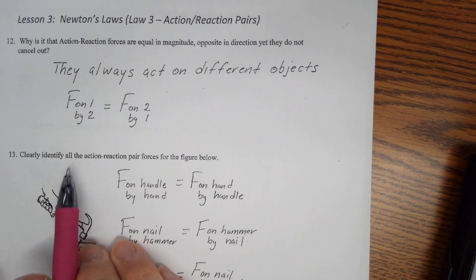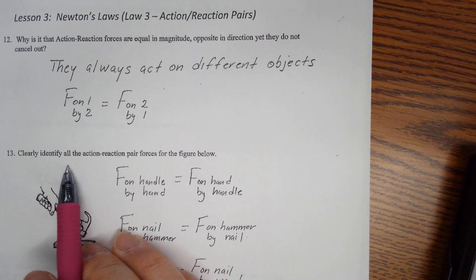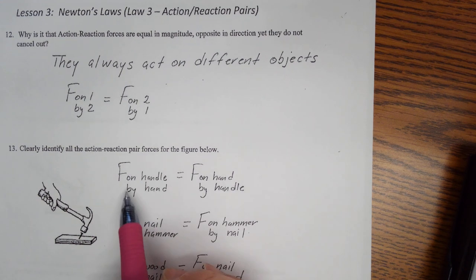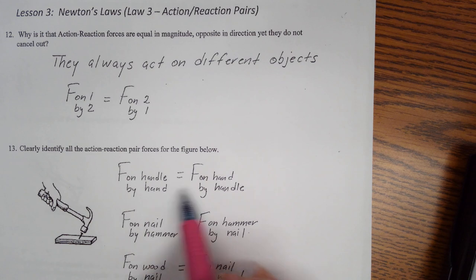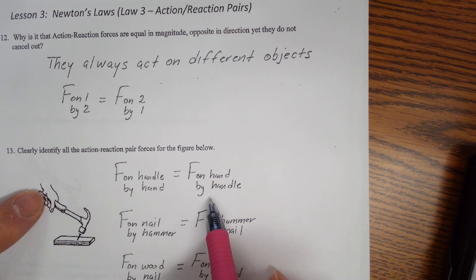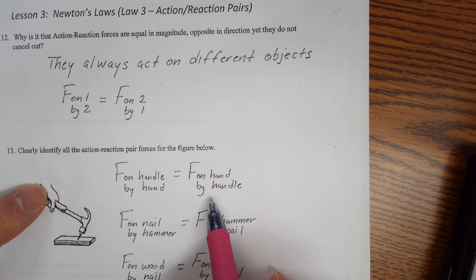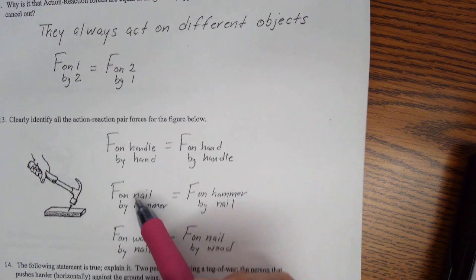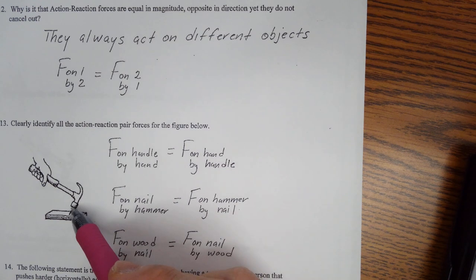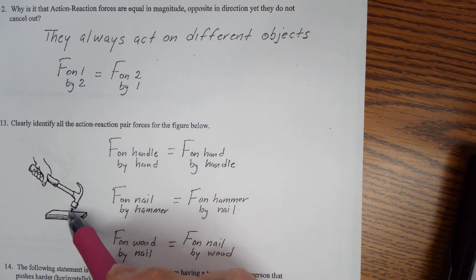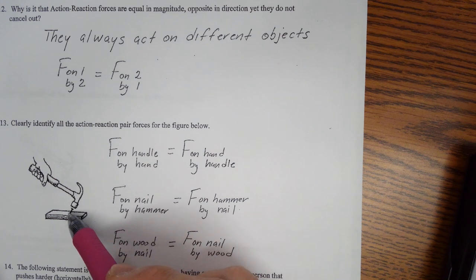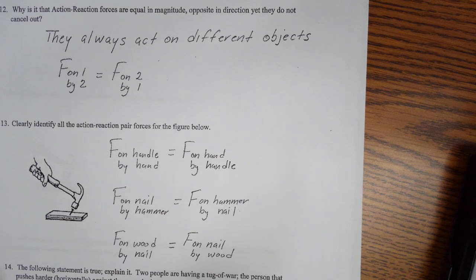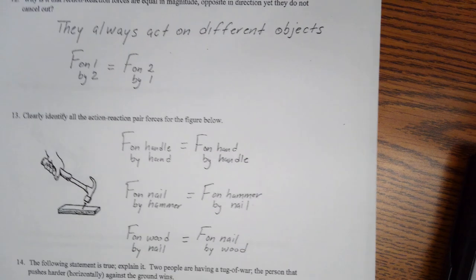Identifying action-reaction pairs in the hammer-nail figure: force on handle by hand and force on hand by handle; force on nail by hammer and force on hammer by nail; force on wood by nail and force on nail by wood. These three are the action-reaction force pairs.